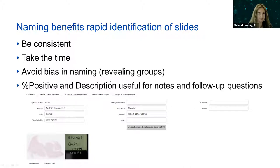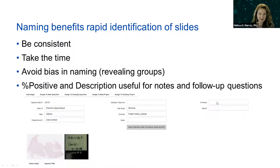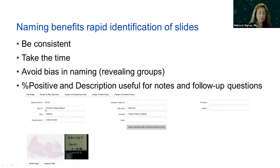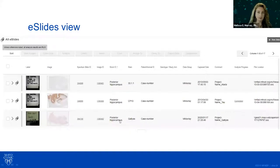We avoid bias in naming that could reveal groups. We keep one of the options for if my team wants to flag items — 'ask mem' is what we put in, and once they've completed tracing we put 'ROI' for region of interest, but it's consistent for each project. We always use patient/animal ID as our case number, always put in the stain, and are consistent with the block ID. Each lab can have their own data group within Aperio technology.